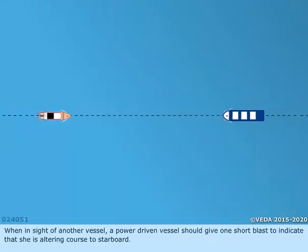When in sight of another vessel, a power-driven vessel should give one short blast to indicate that she is altering course to starboard.